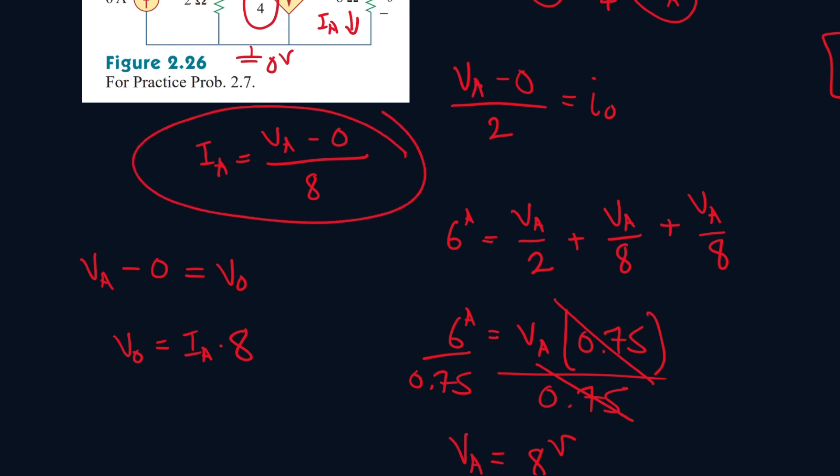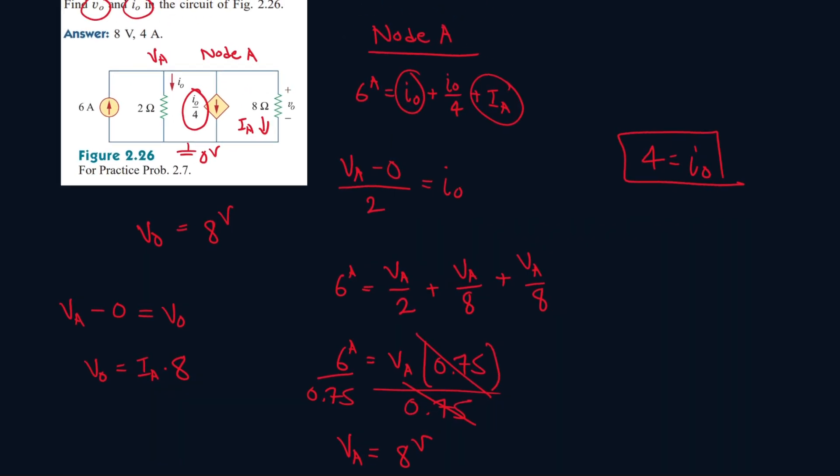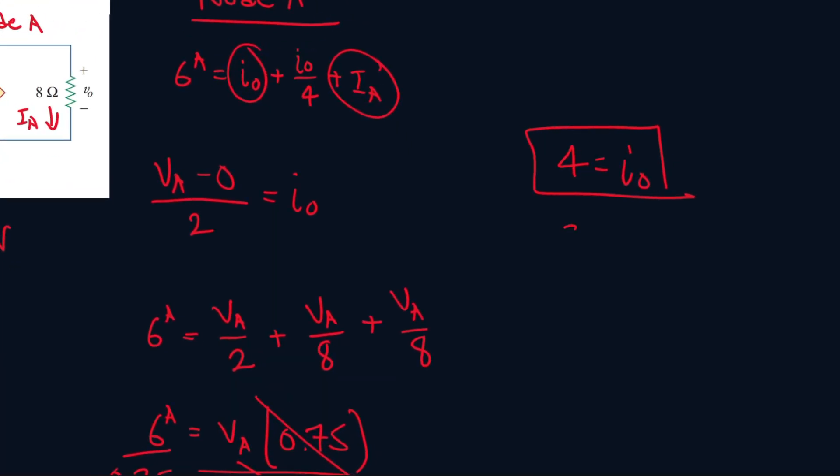And look at this equation. We have IA and an 8. So if you bring this 8 to this side, we have 8 IA. And 8 IA is equal to VA. And 8 IA is also equal to V0. So V0 is actually equal to 8 volts.